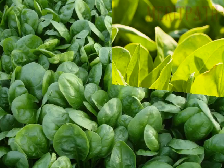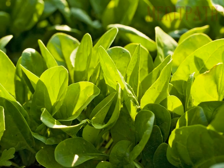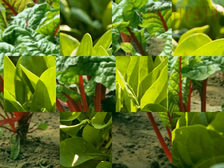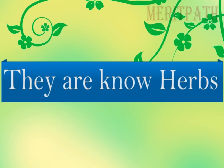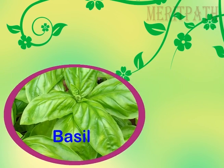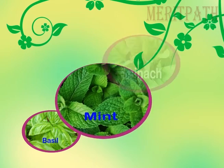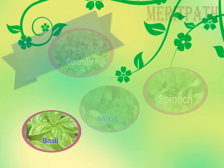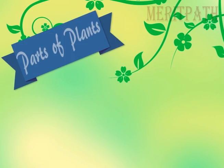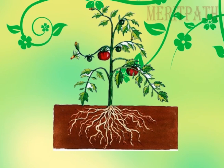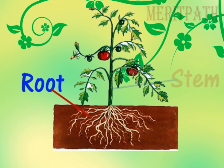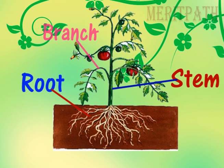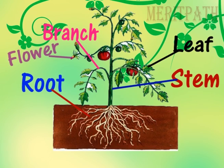Some plants are short and have very weak and thin stems; they are known as herbs. Examples are basil, mint, spinach, and coriander. So, what are the parts of a plant? A plant consists of roots, stem, branches, leaves, flowers, and fruits.